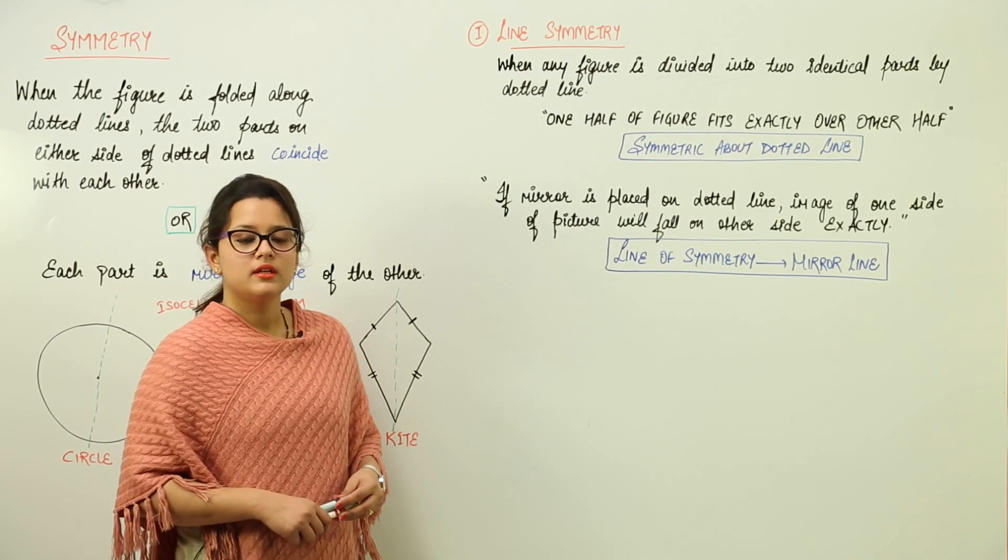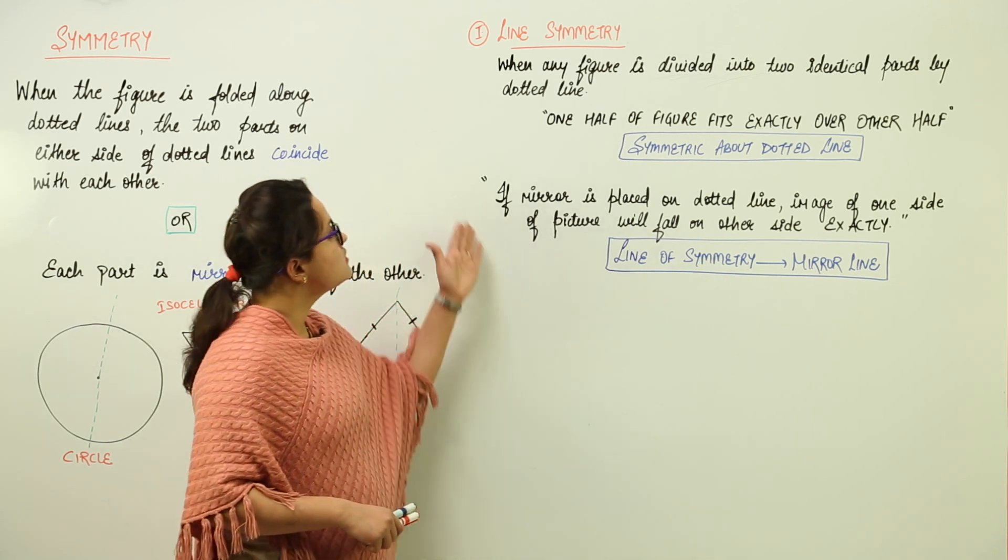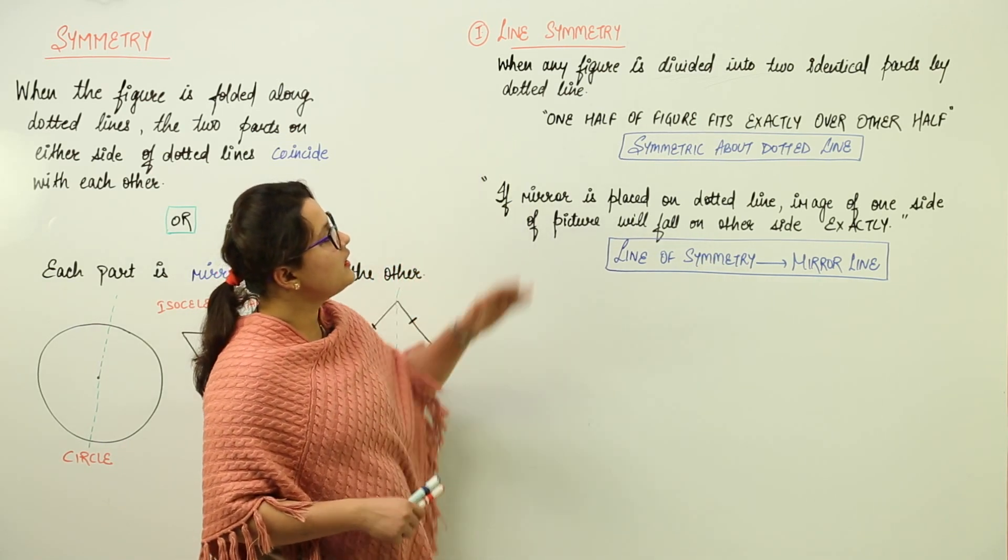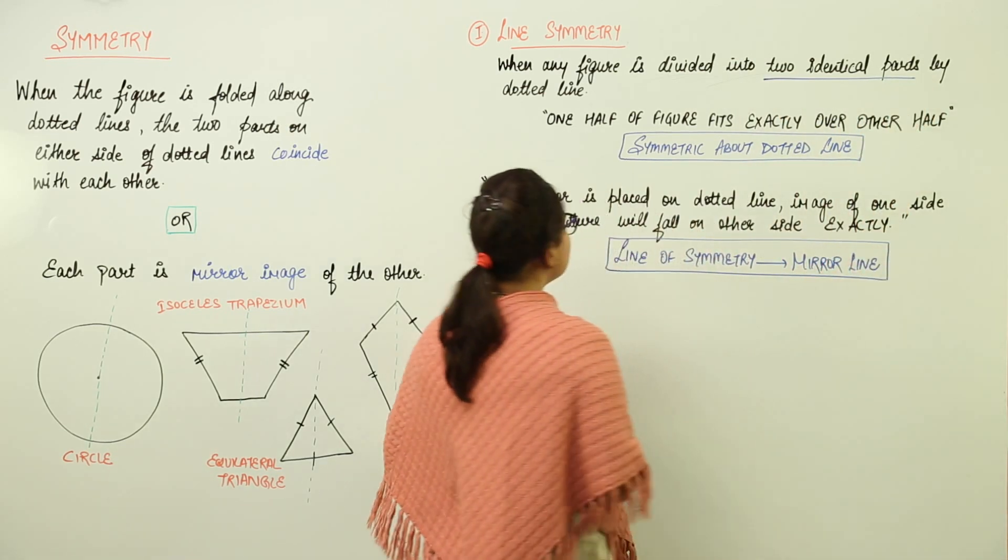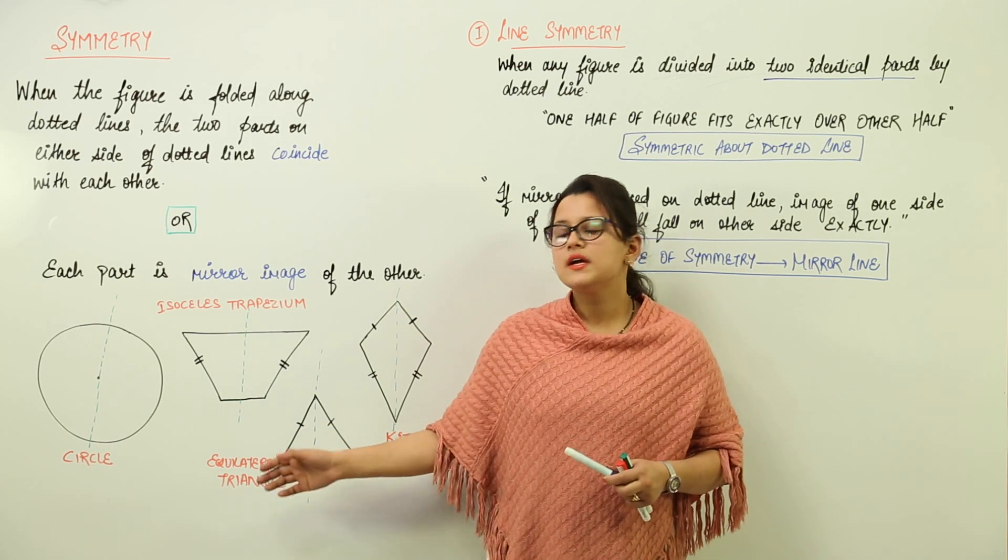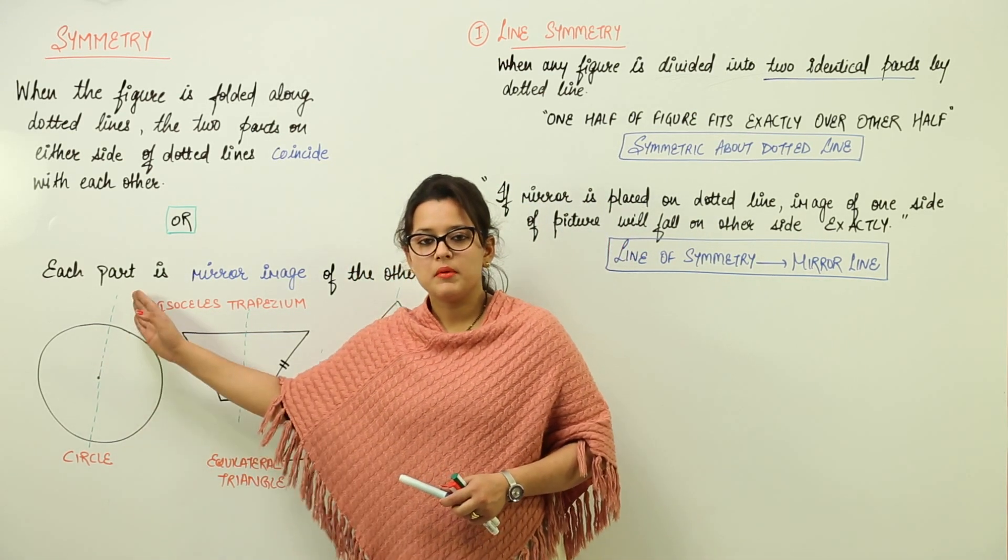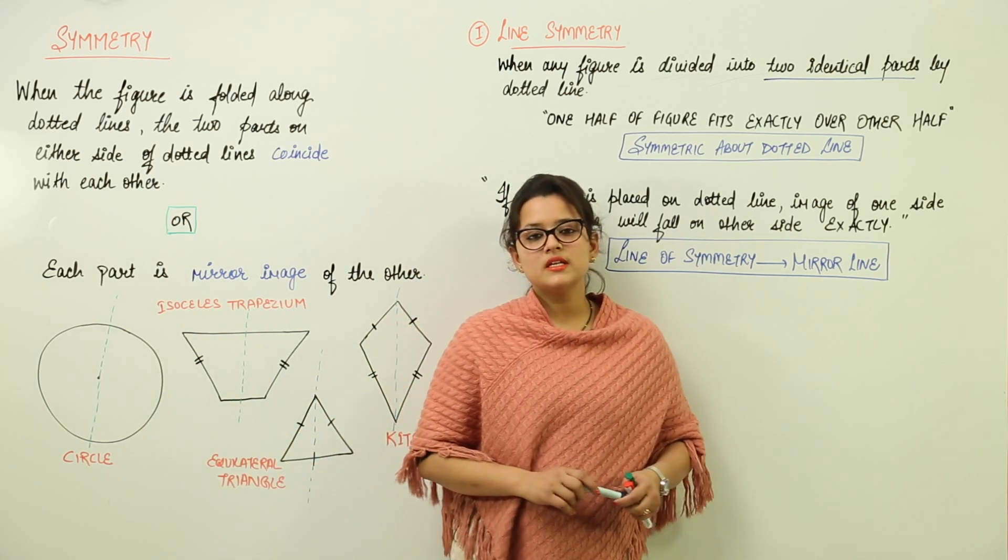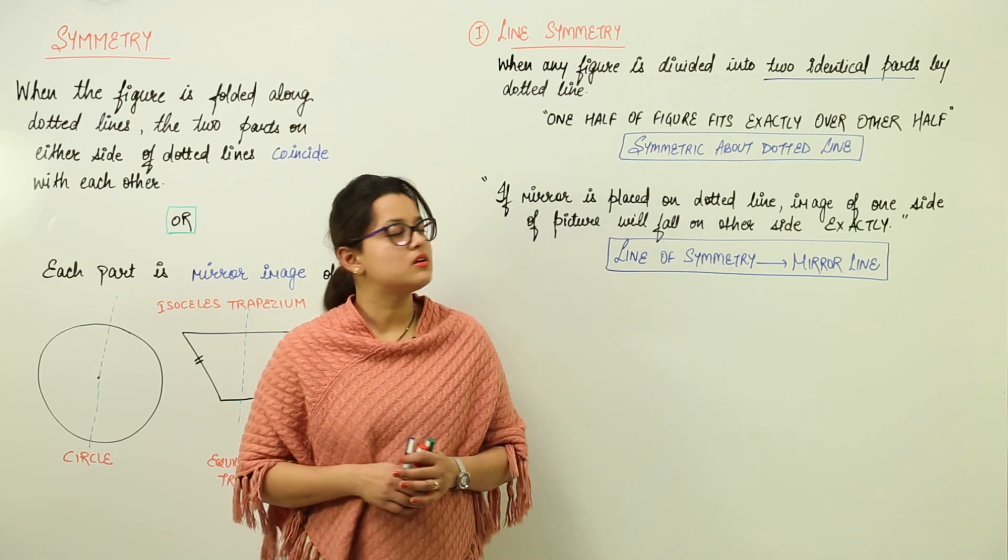Line symmetry. In symmetry we have line symmetry. Line symmetry means when any figure is divided into two identical parts by the dotted line. As we have seen in these figures also, the figure is divided into two identical parts by a dotted line. We can say that this line is showing the line symmetry in all these figures.